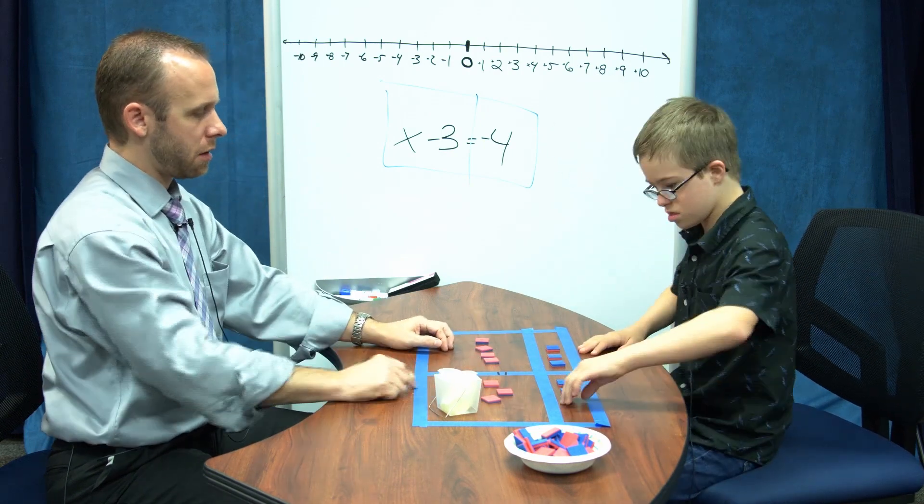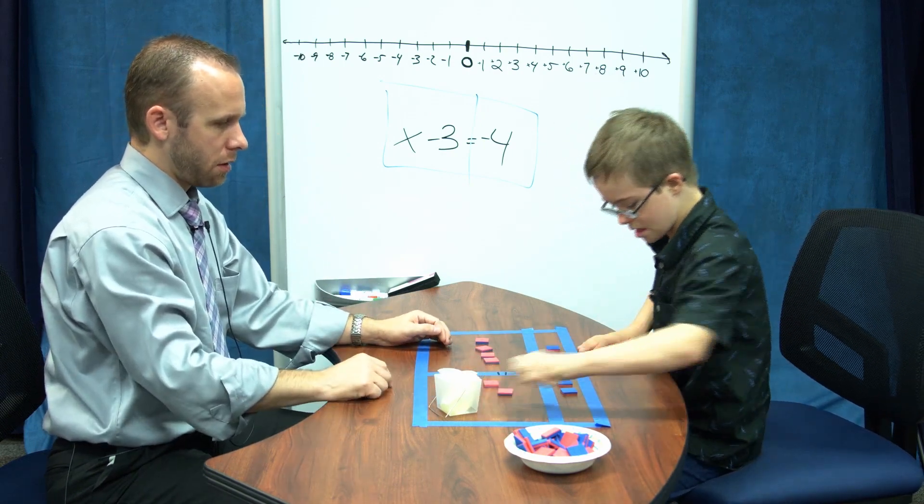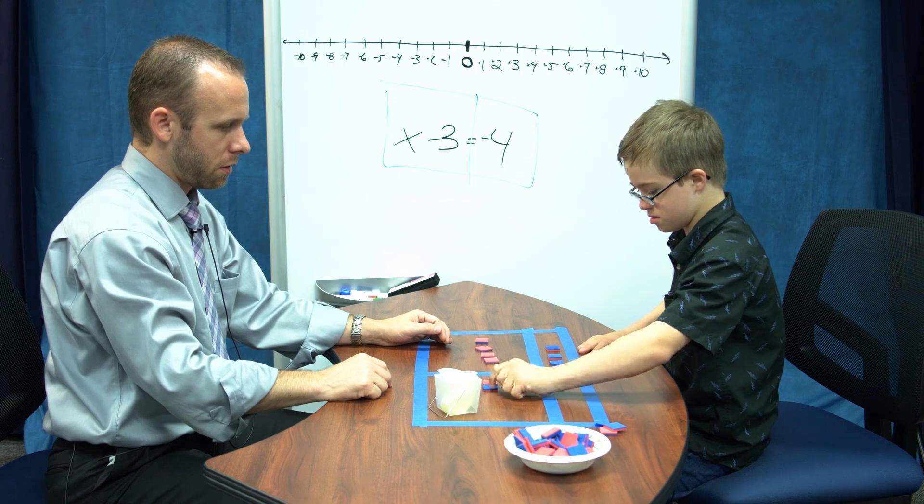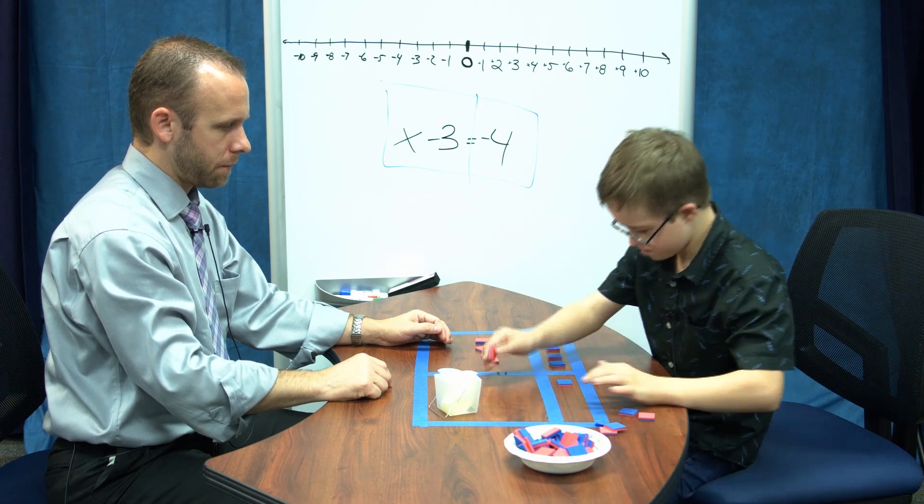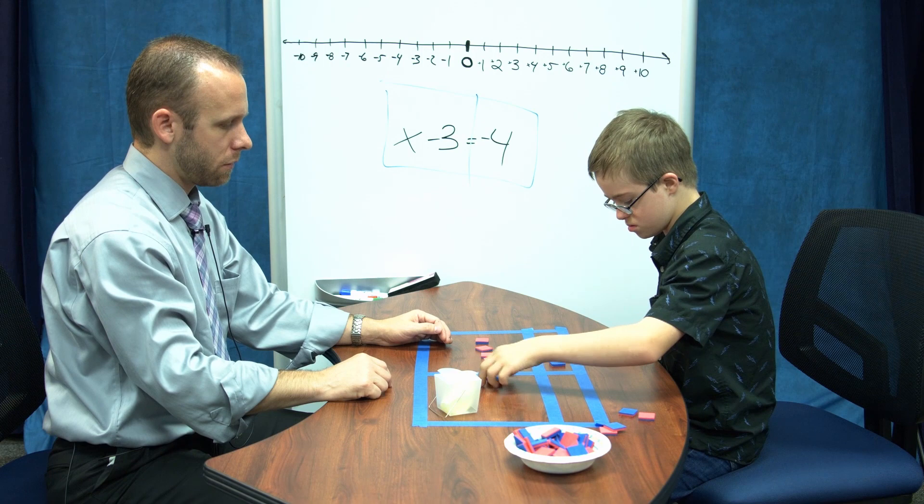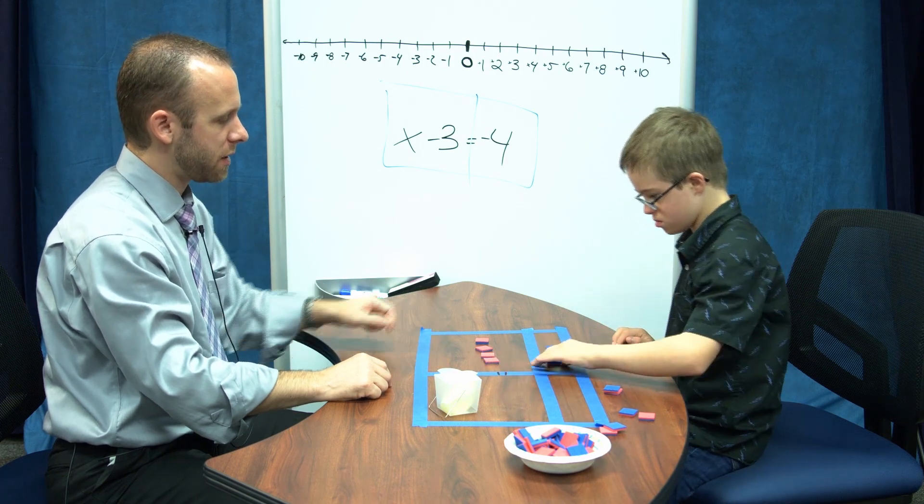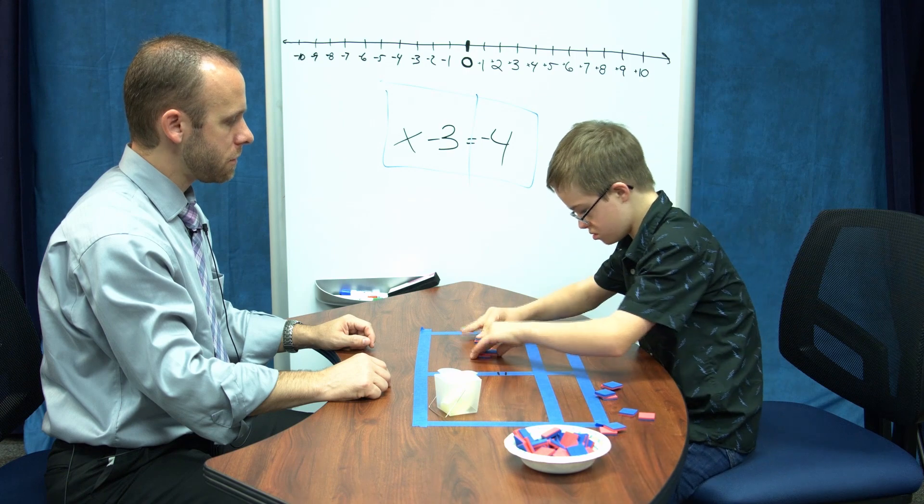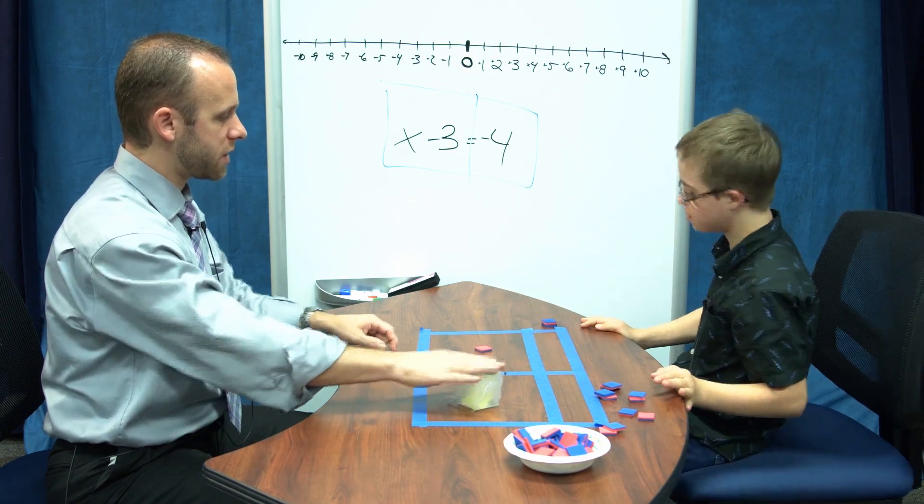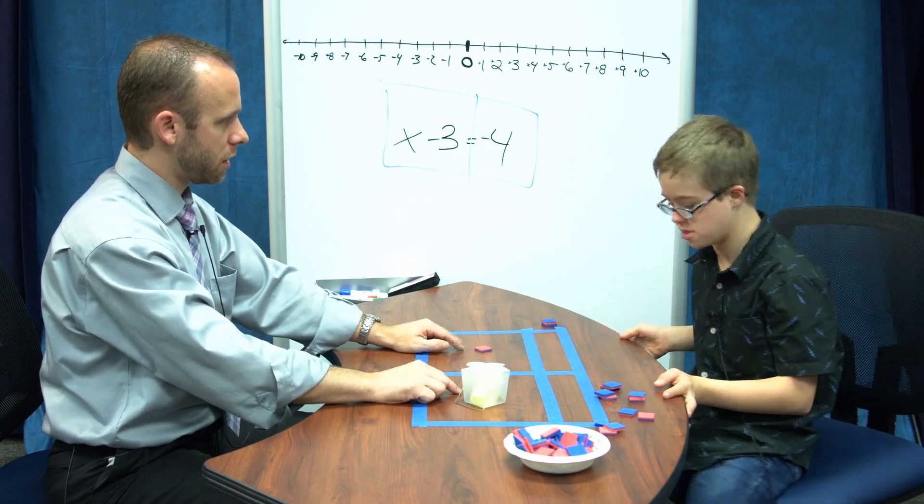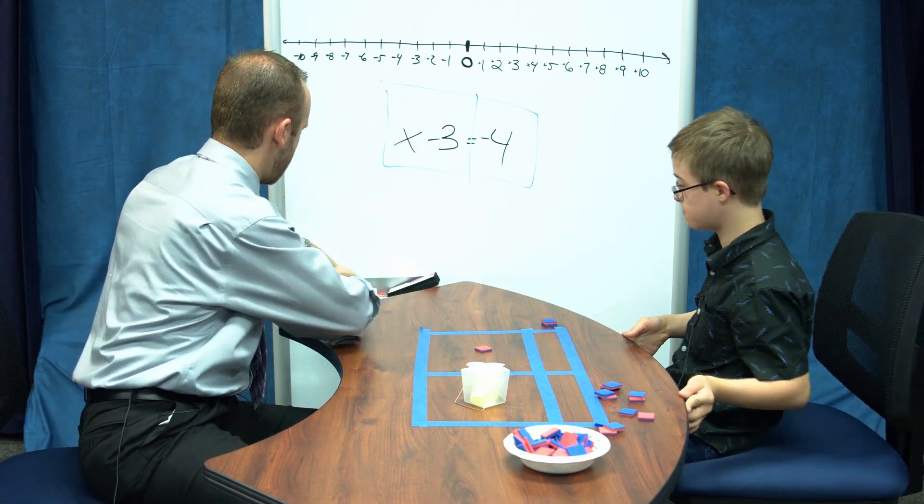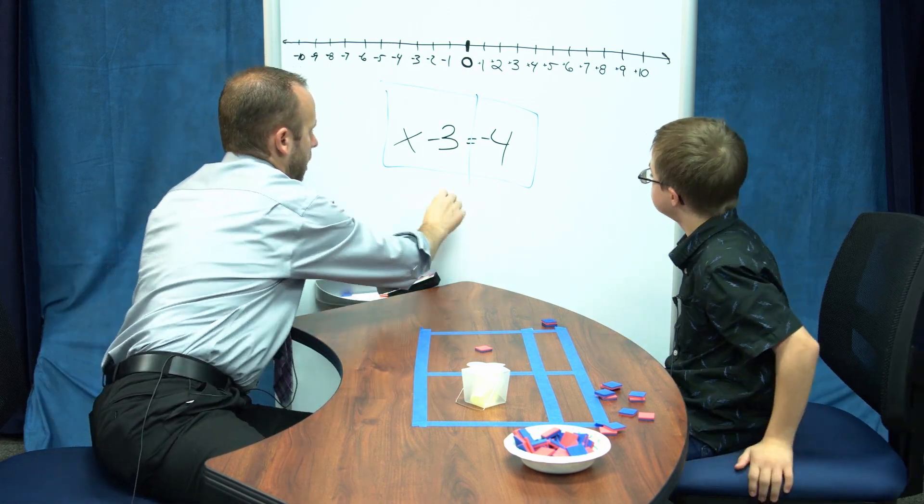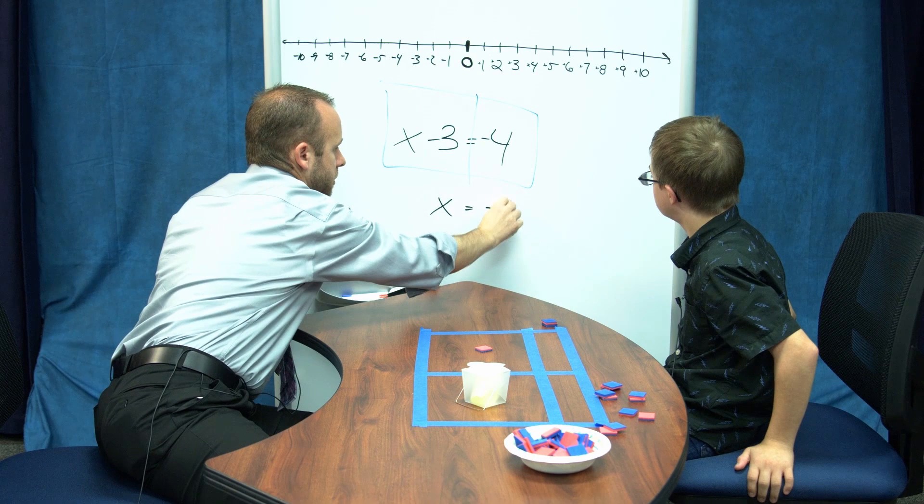Perfect. Simplify this side. Find me, take something away. Good job. How do you simplify this side? So what's x supposed to be equal to? Negative 1.